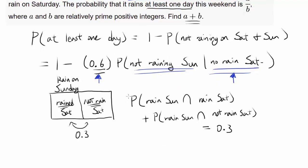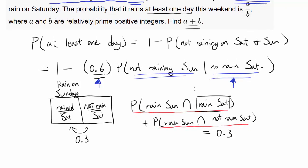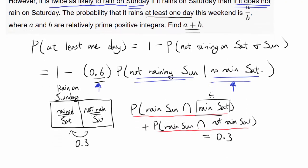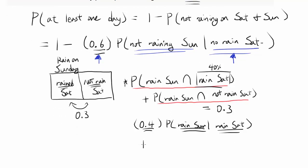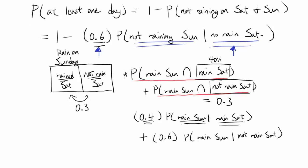Let's break down these two probabilities. P(rain Sunday AND rain Saturday) = P(rain Saturday) × P(rain Sunday | rain Saturday) = 0.4 × P(rain Sunday | rain Saturday). And P(rain Sunday AND no rain Saturday) = 0.6 × P(rain Sunday | no rain Saturday). So: 0.4 × P(rain Sunday | rain Saturday) + 0.6 × P(rain Sunday | no rain Saturday) = 0.3.